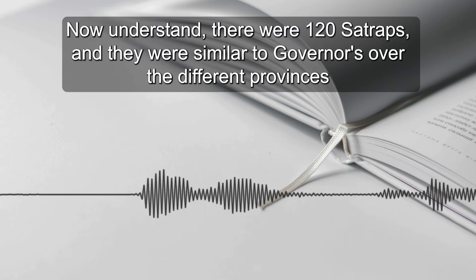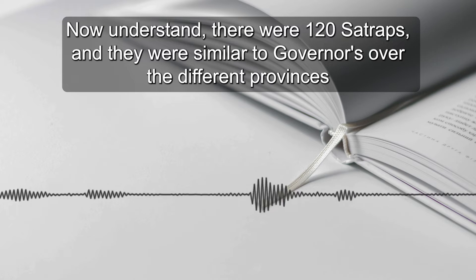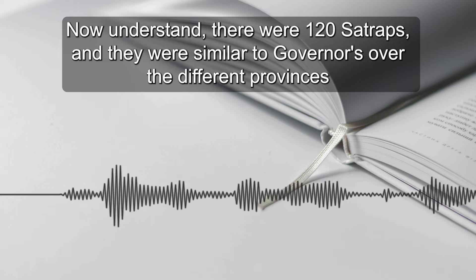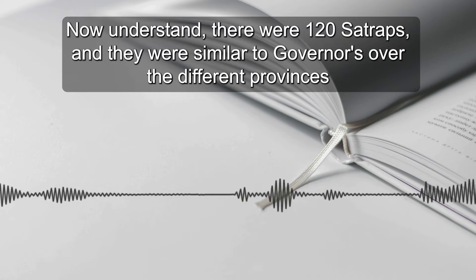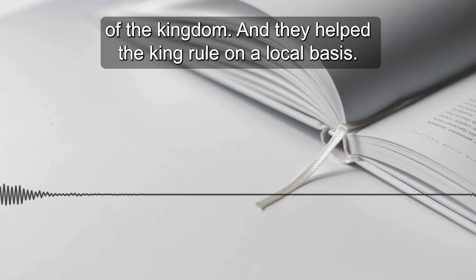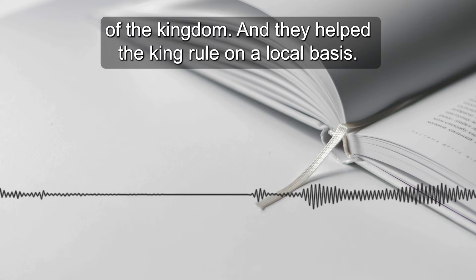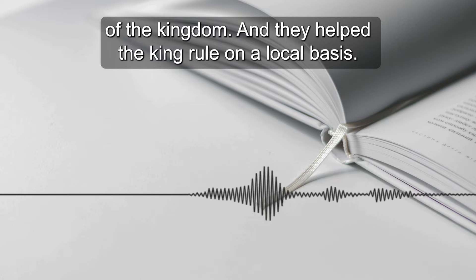Now, understand, there were 120 satraps. And they were similar to governors over the different provinces of the kingdom. And they helped the king rule on a local basis.